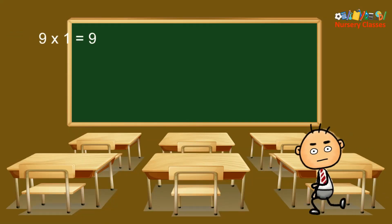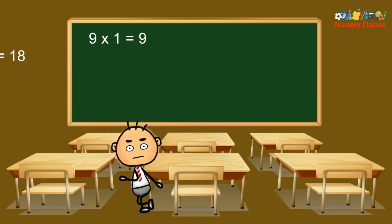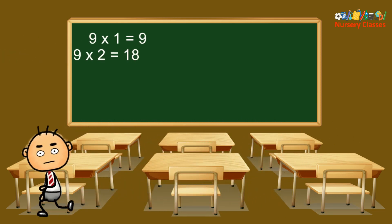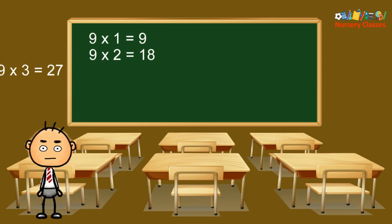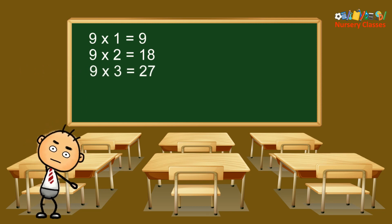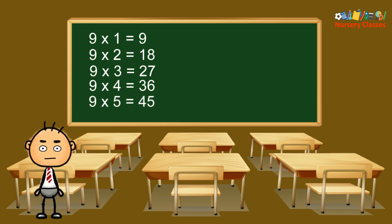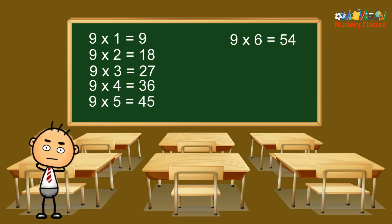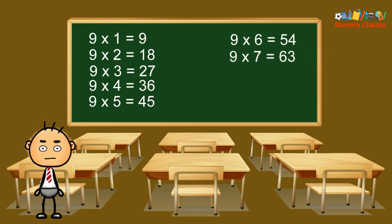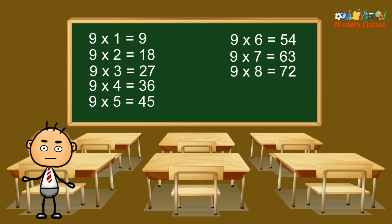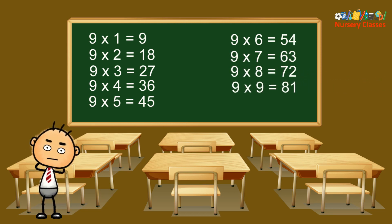9×1 equals 9, 9×2 equals 18, 9×3 equals 27, 9×4 equals 36, 9×5 equals 45, 9×6 equals 54, 9×7 equals 63, 9×8 equals 72, 9×9 equals 81, 9×10 equals 90.